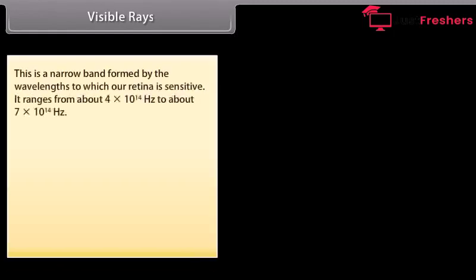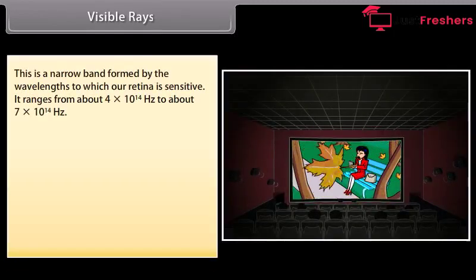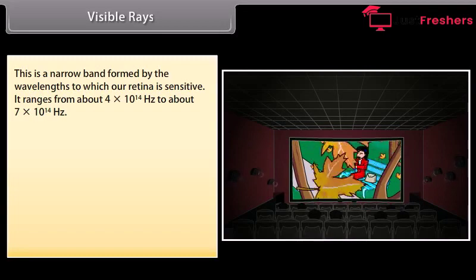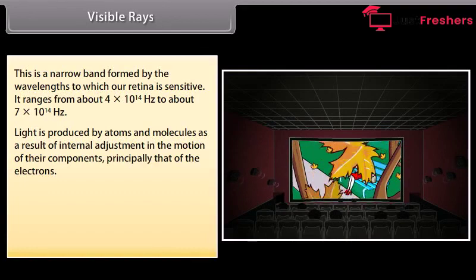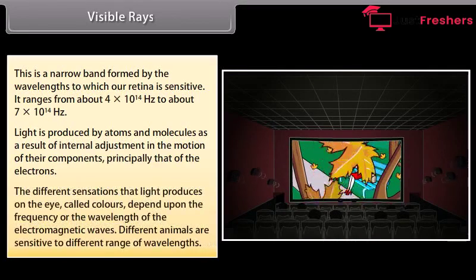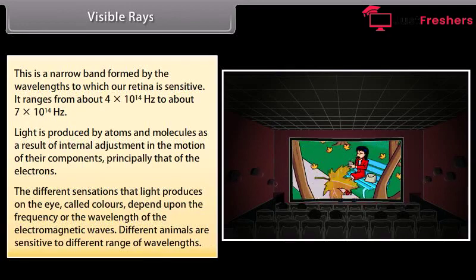Visible light ranges from about 4 × 10¹⁴ Hz to about 7 × 10¹⁴ Hz. Light is produced by atoms and molecules as a result of internal adjustments in the motion of their components, principally that of electrons. The different sensations that light produces on the eye, called colors, depend upon the frequency or wavelength of the electromagnetic waves. Different animals are sensitive to different ranges of wavelengths.